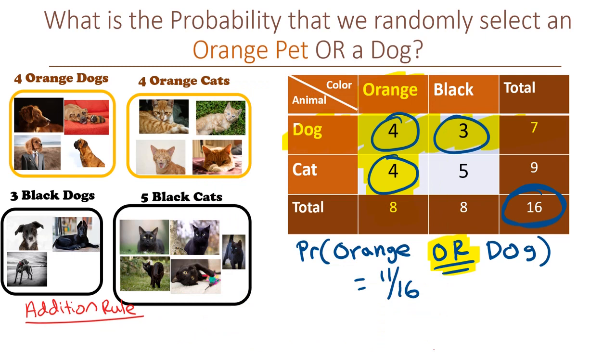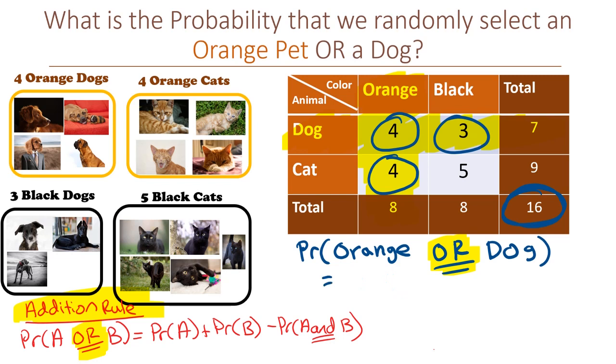We will need to use the full addition rule which states that the probability of event A or B is the probability of A plus the probability of B minus the probability of A and B. So here the probability of orange or dog is the probability of orange plus the probability of dog minus the probability of orange and dog.